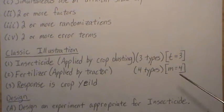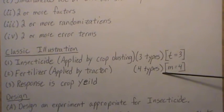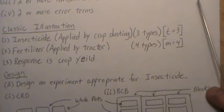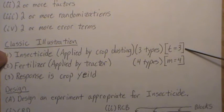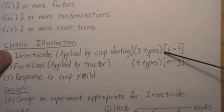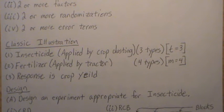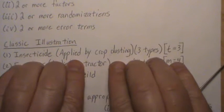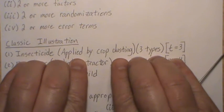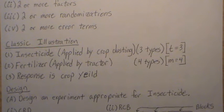The response will be crop yield. Let's assume there are three types of insecticide and four types of fertilizer. The way a split plot design works is you create a design for the factor that requires a larger experimental unit — land in this case — and design something for the insecticide, pretending like the other factors are not there.